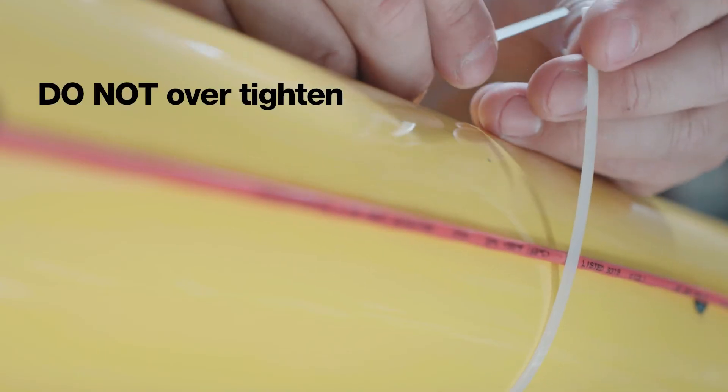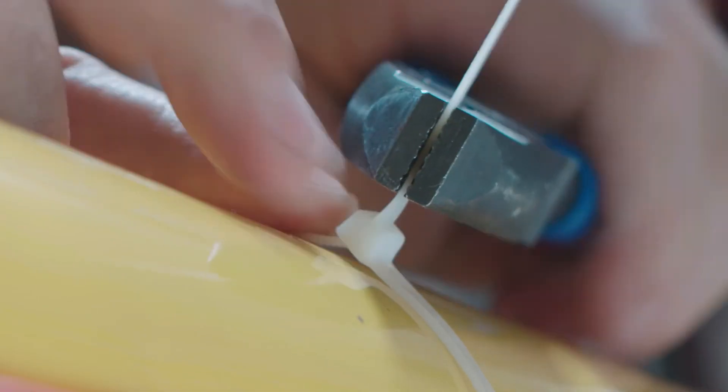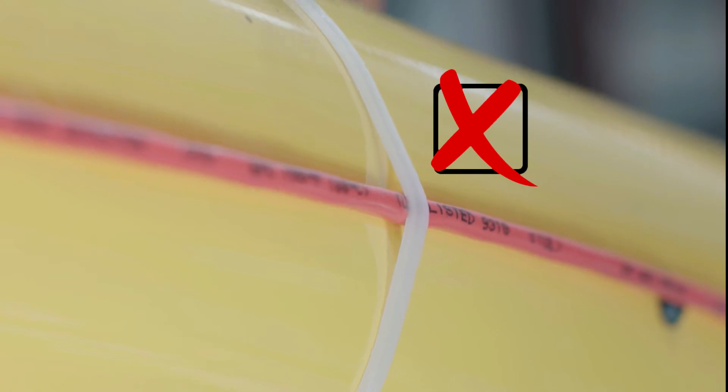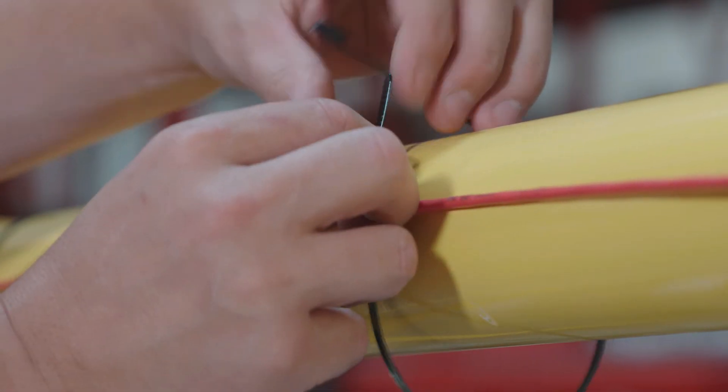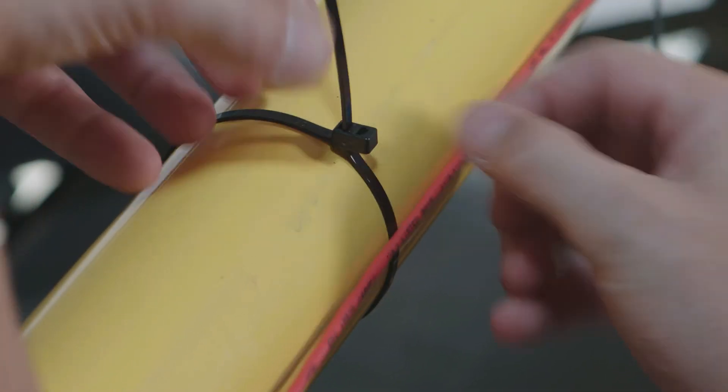Do not over-tighten the fasteners, as this may compromise the outer jacket or crush the inner insulation which may cause false alarms. All fasteners must allow the wire to expand and contract with temperature changes.